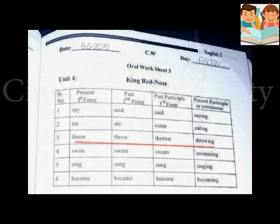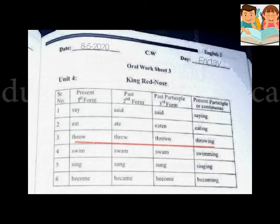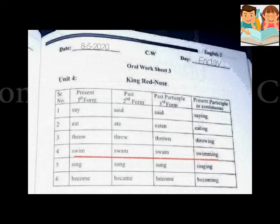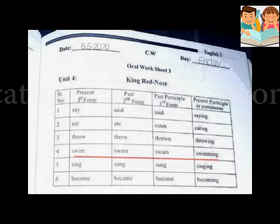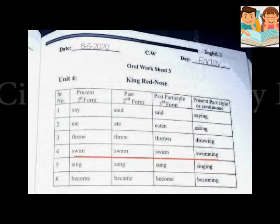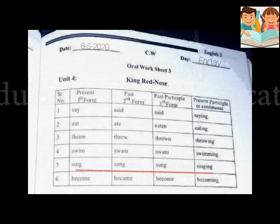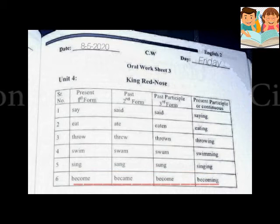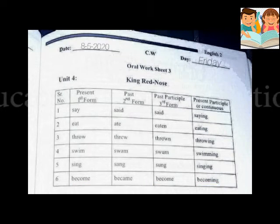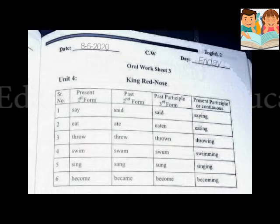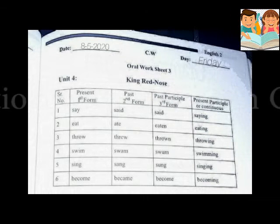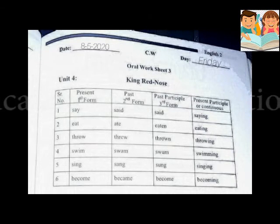The fourth is swim, swam, swum, swimming. Then sing, sang, sung, singing. And the last is become, became, become, becoming. There are three forms of the verb and one -ing form. You have to remember all these words in present, past, past participle, and -ing form.